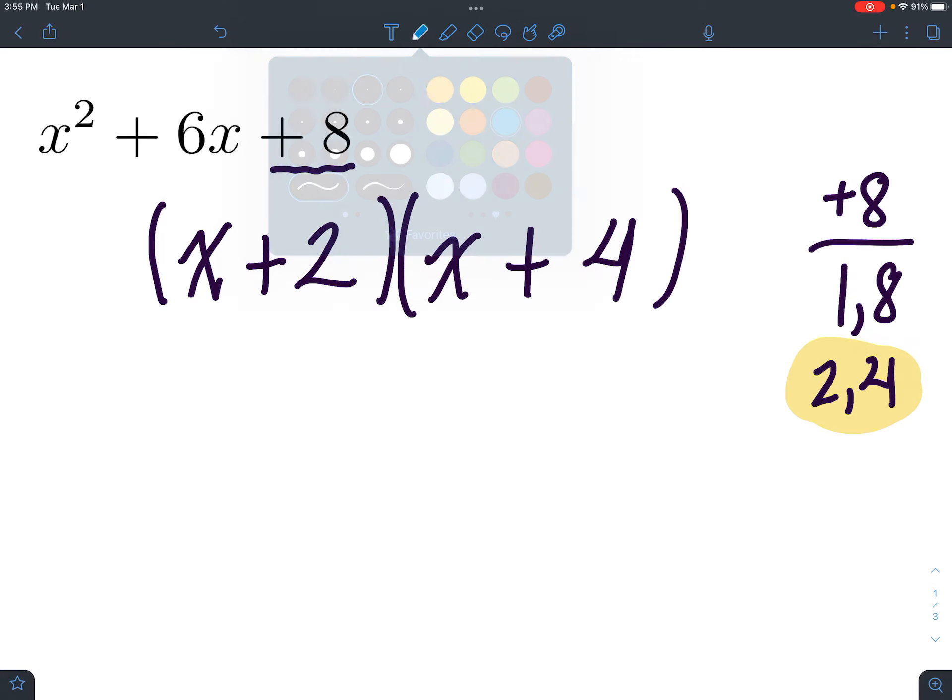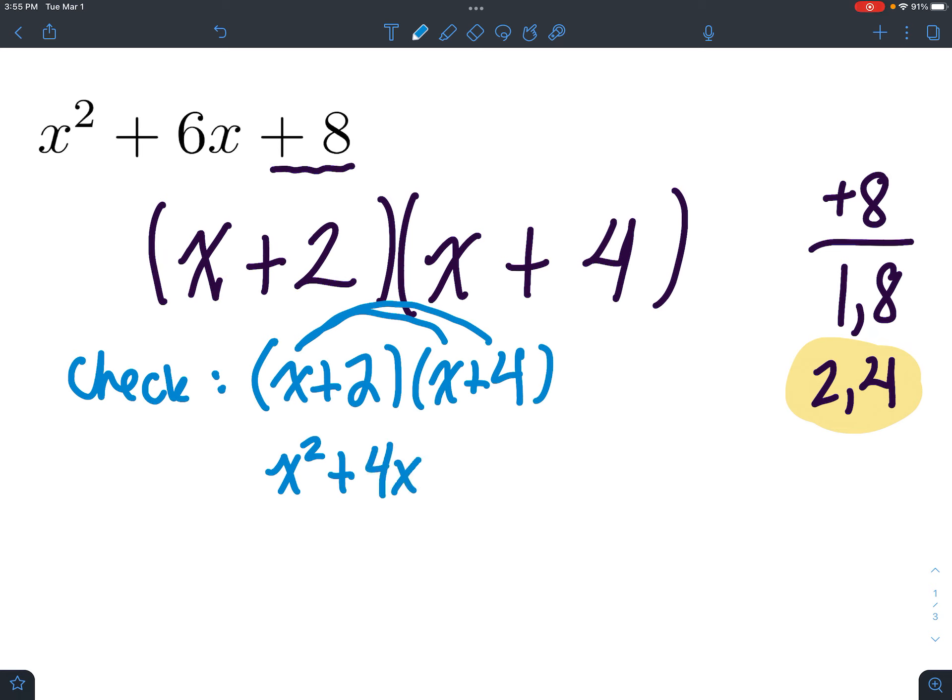But why is that the answer? We can check our answer. Remember how we distributed this last time? So x squared plus 4x plus 2x plus 8. See how we got 2 times 4 is 8 ends up being our last term. That's why we're looking at factor pairs of 8, because that's what generates this last term. And this, of course, combines to make 6x. So we got it right.